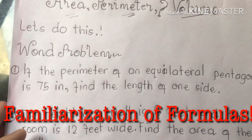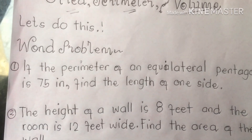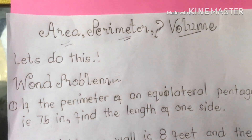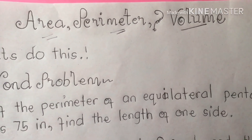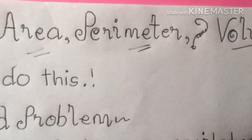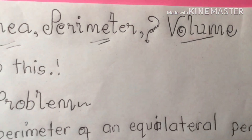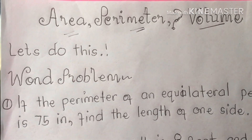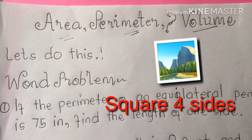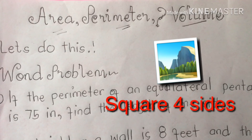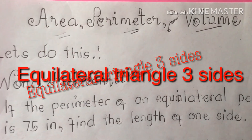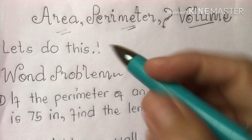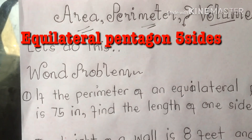We're going to solve word problems, but before that we should practice getting perimeter, area, and volume so we can master all the formulas. Perimeter: you add all the sides — side plus side plus side — it depends on the number of sides of the polygon. For example, a square has four sides, an equilateral triangle has three sides, a hexagon has six sides, and a pentagon has five sides. You are going to add all the sides.